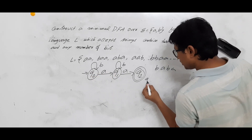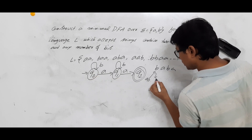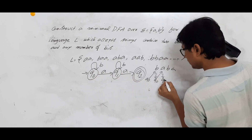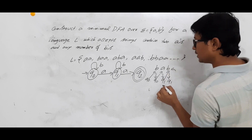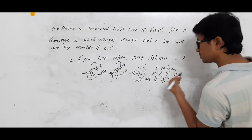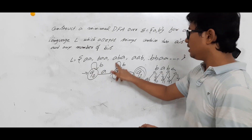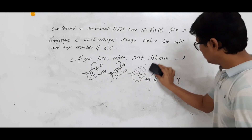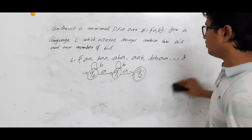Some students may ask: will BABA be accepted? From Q0 on B you go to Q0; Q0 on A you go to Q1; Q1 on B you stay in Q1; Q1 on A you go to Q2. Q2 is the final state, so BABA is accepted. Is it clear?